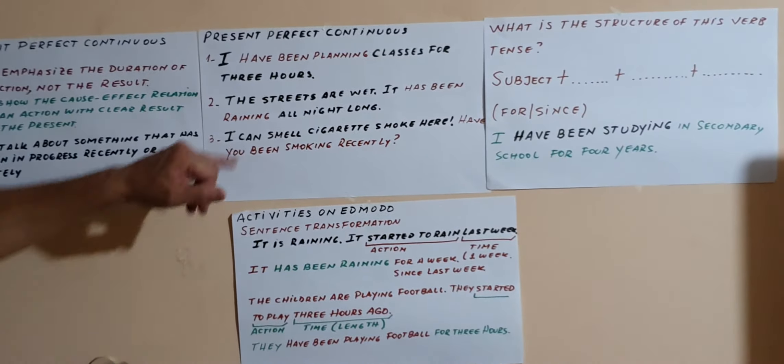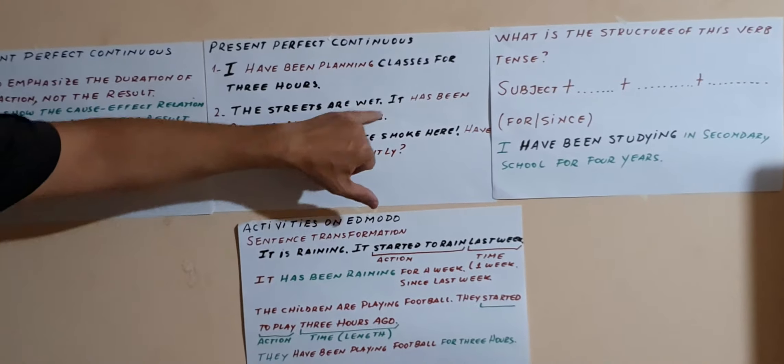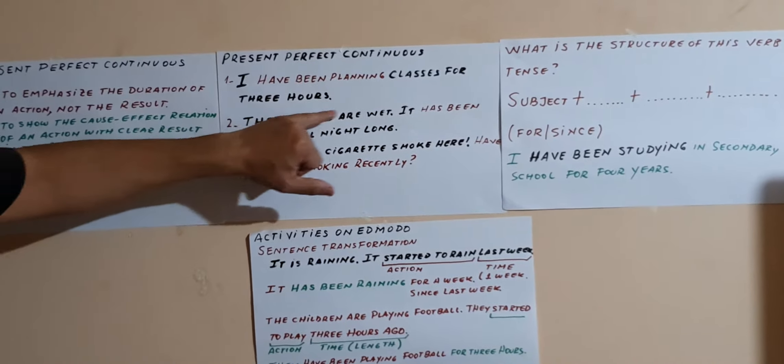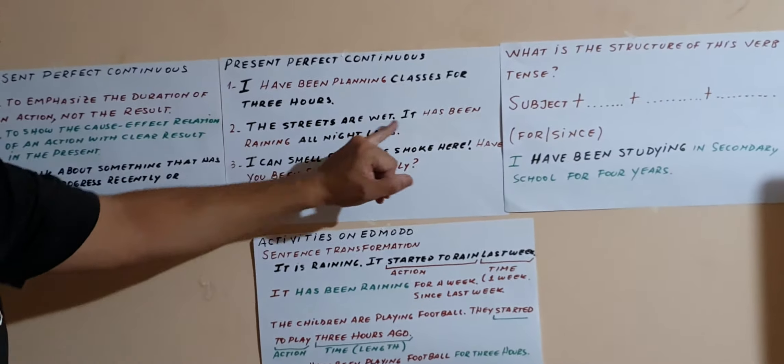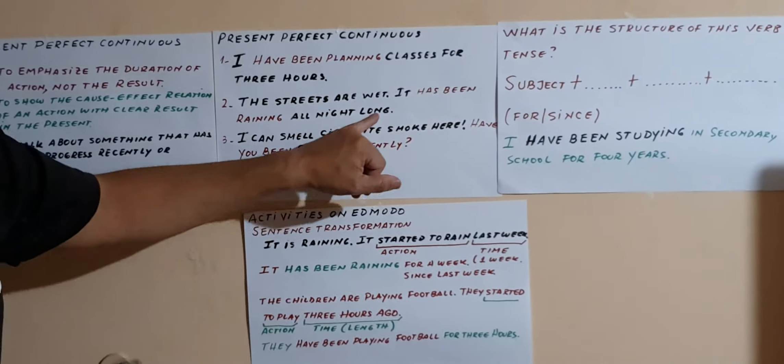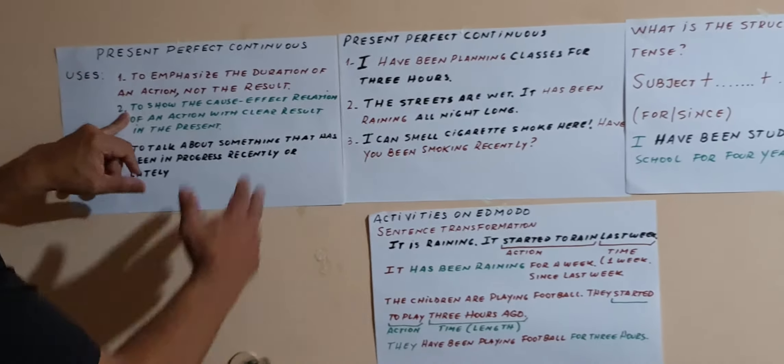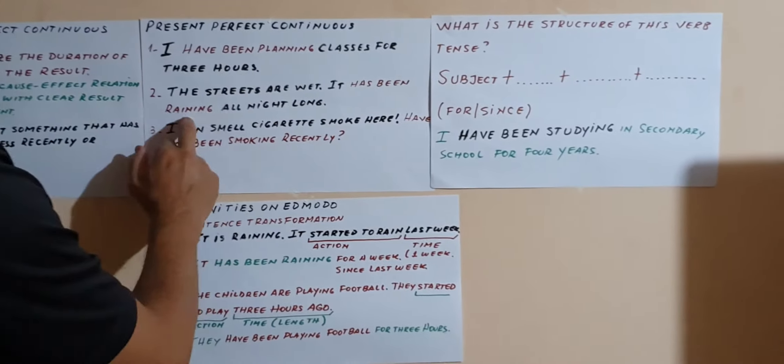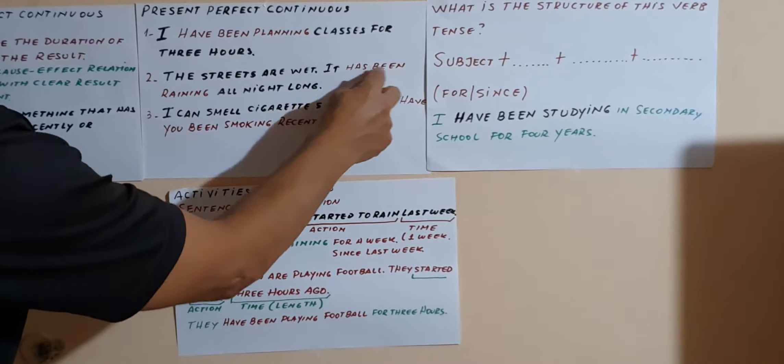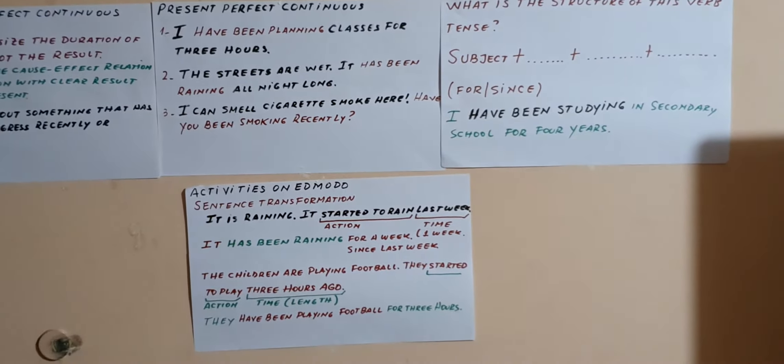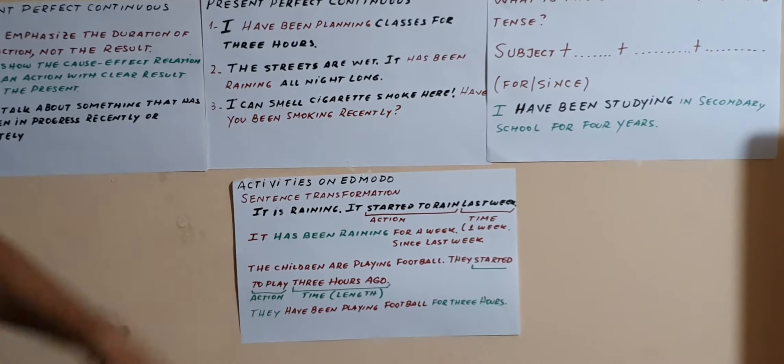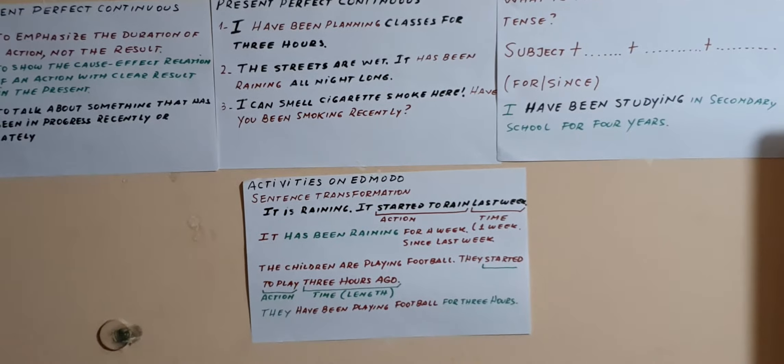Notice: have been planning with -ing. The streets are wet. Esta palabra 'wet' significa húmedo, mojado. The streets are wet, why? It has been raining all night long. Es decir, es el uso dos: muestro la causa efecto porque están mojadas. It has been raining all night long.